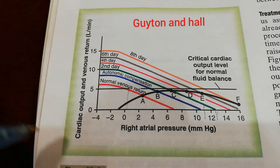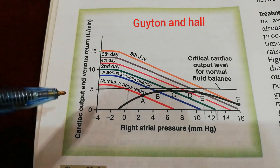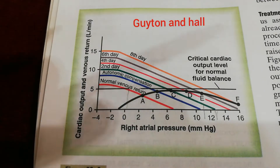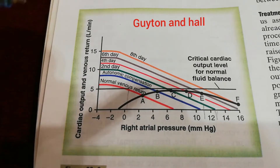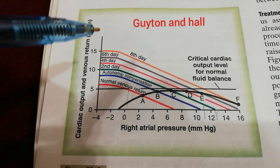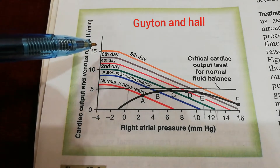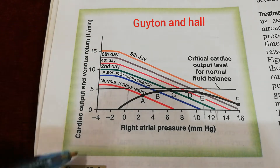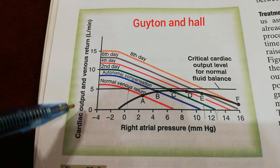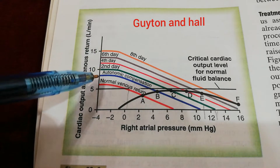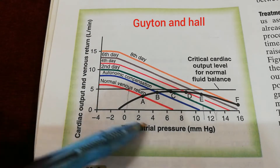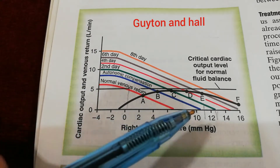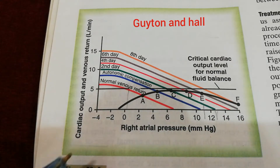Today in this lecture we are going to discuss the graphical analysis of decompensated heart failure. In the last lecture we discussed compensated cardiac failure with the help of a graph. Now it is the same graph. In this graph we have cardiac output and venous return on the y-axis, and the right atrial pressure and mean systemic filling pressure on the x-axis.